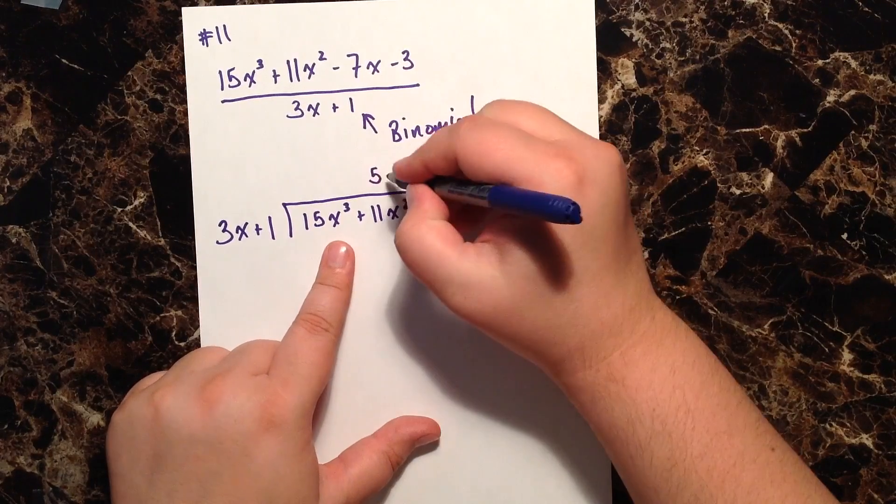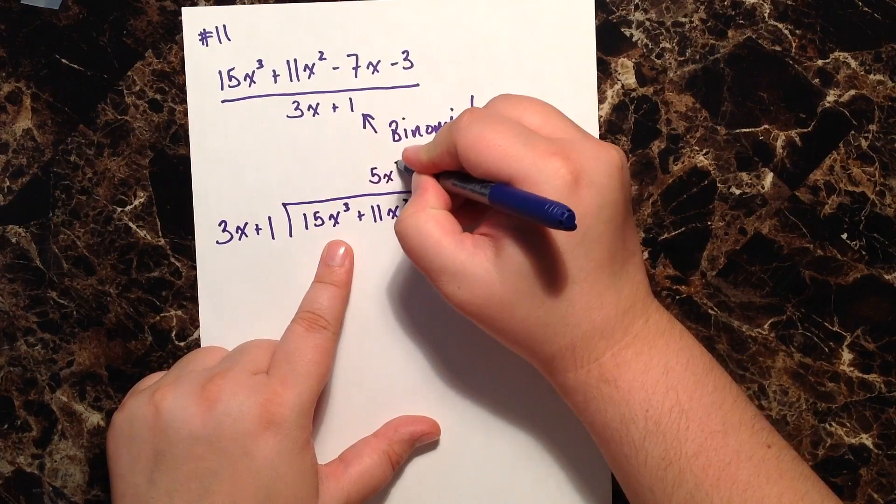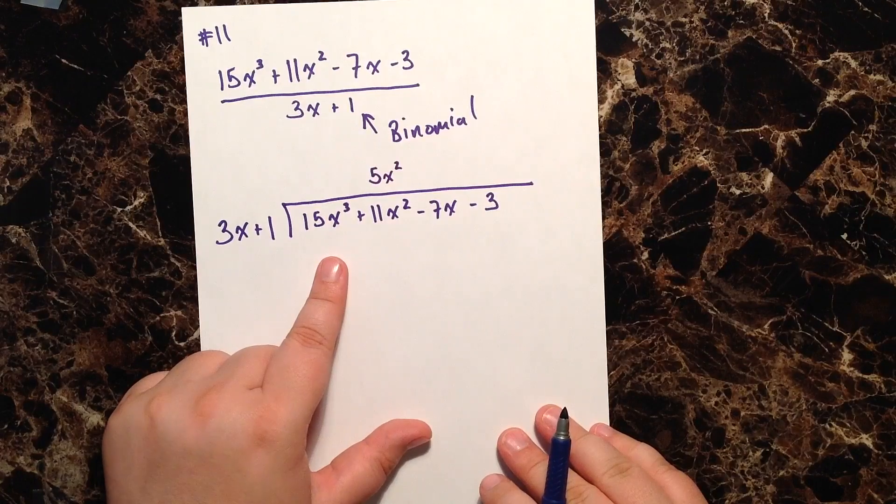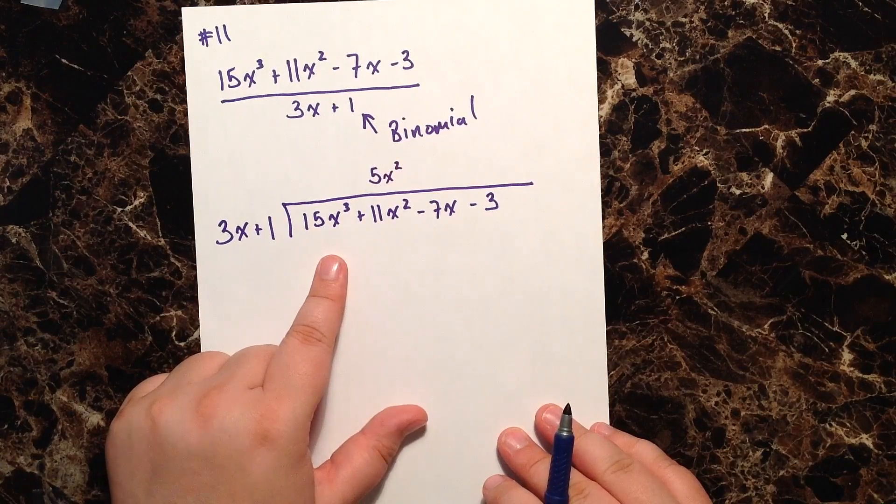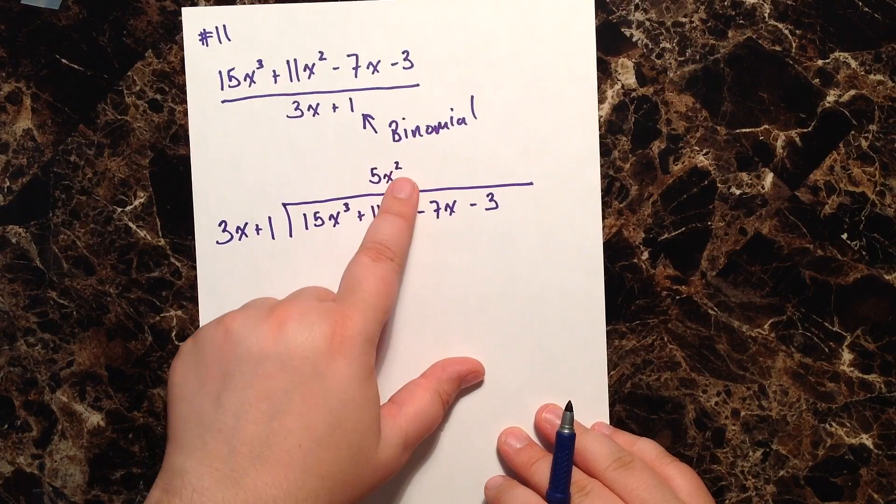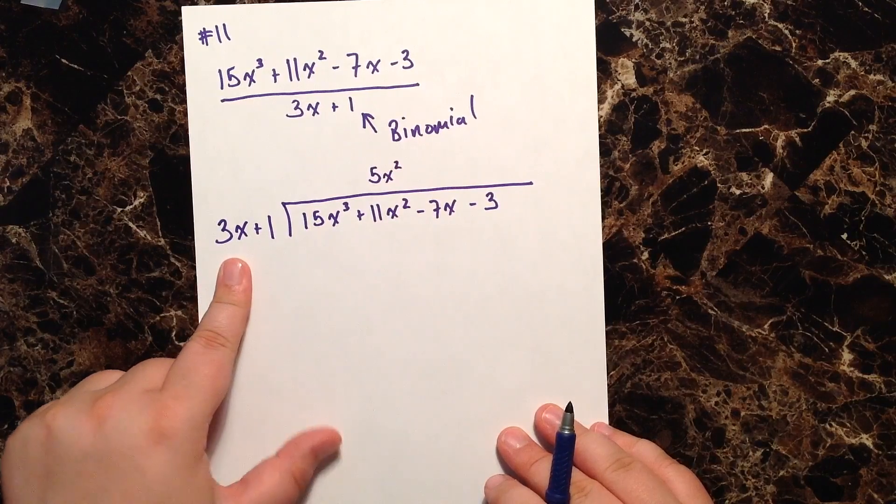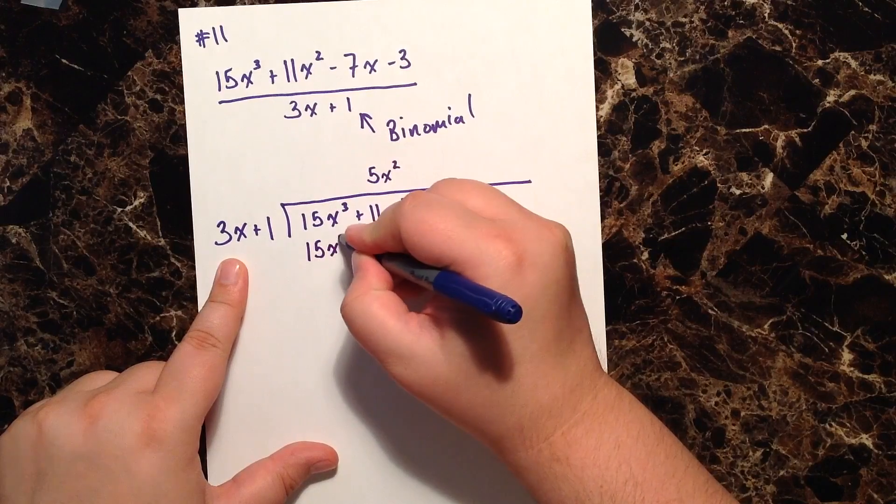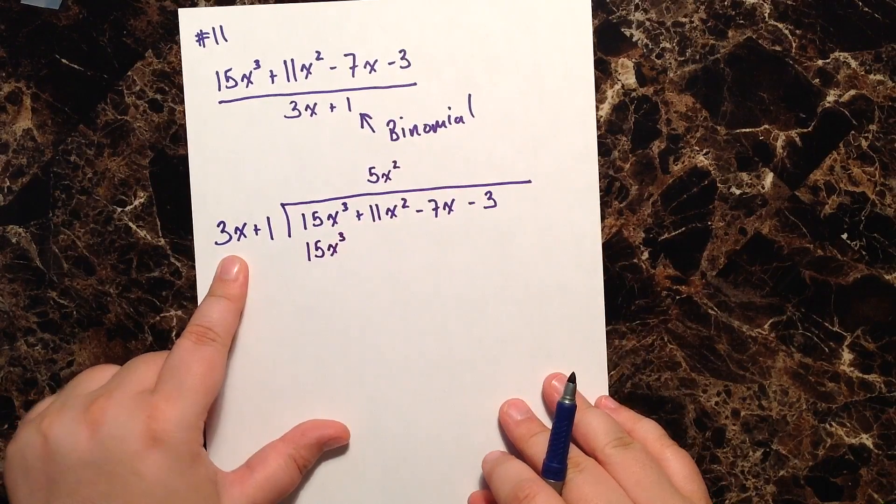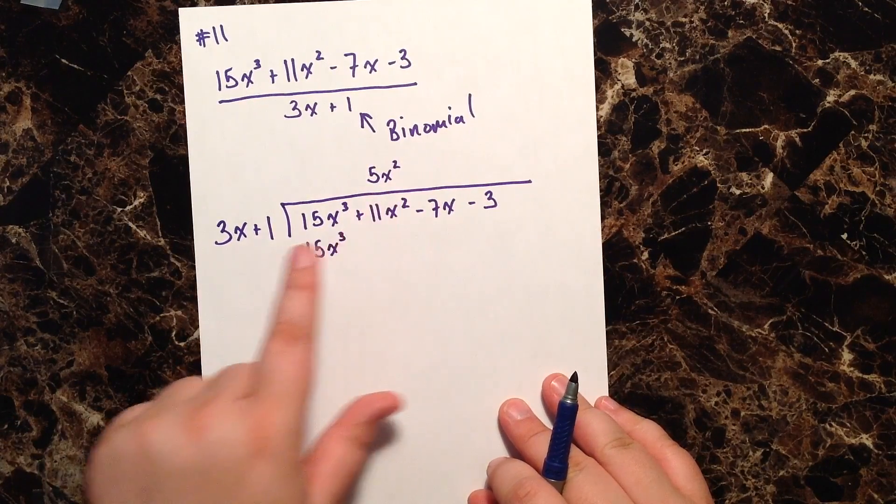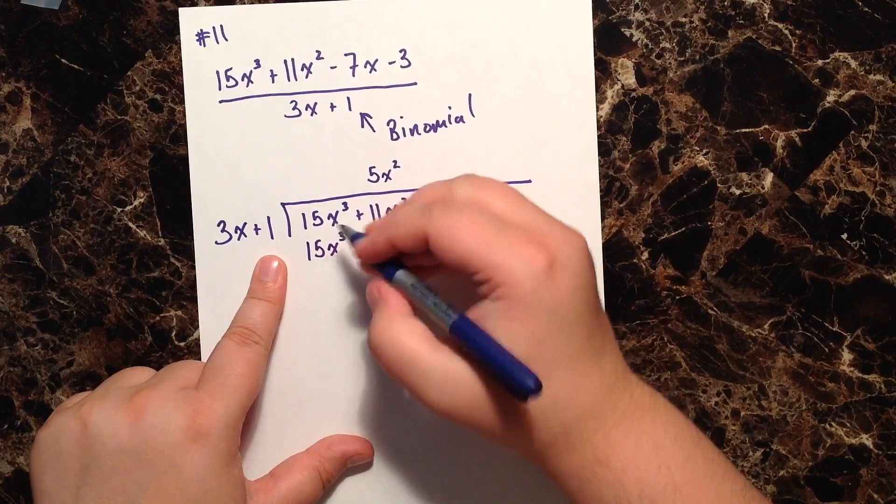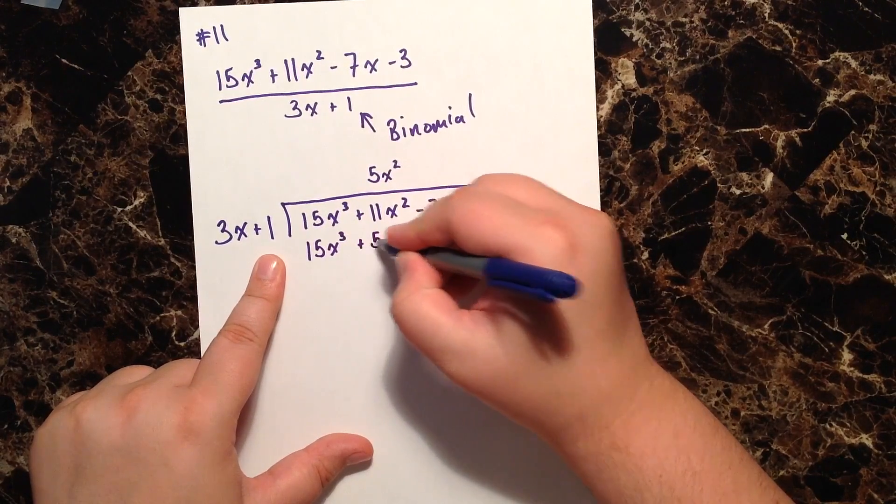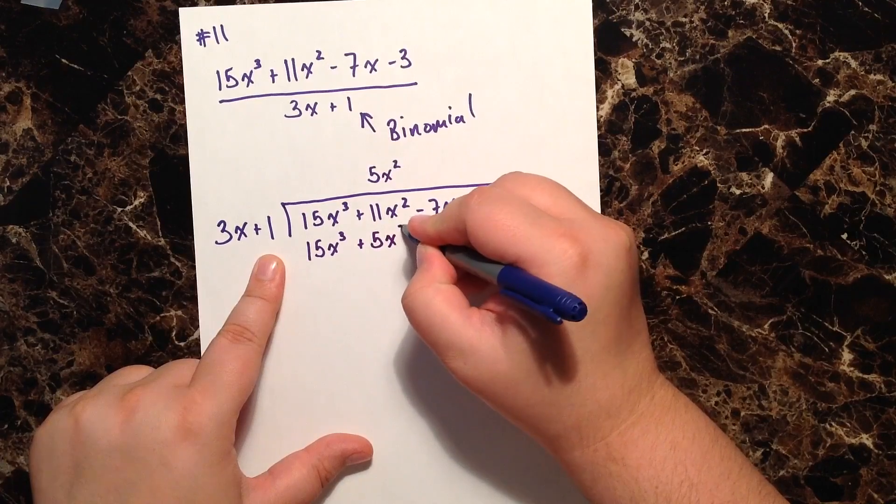And then when I do that, I go 5x squared times 3x, that gives me 15x cubed. 5x squared times 1 gives me a positive 5x squared.